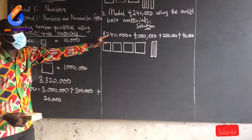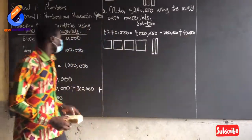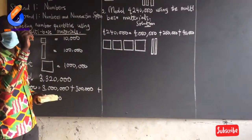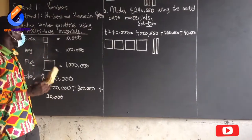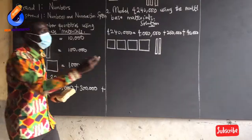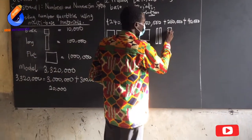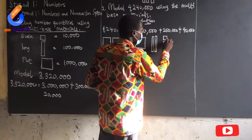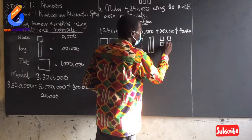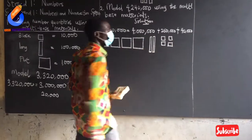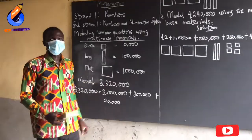So I am modeling this amount using these multibase materials. Then the 40,000 is for the block. 1 block gives me 10,000, so 4 blocks are going to give me 40,000. So I'll draw 4 blocks, and this is how we model quantities using the multibase material.